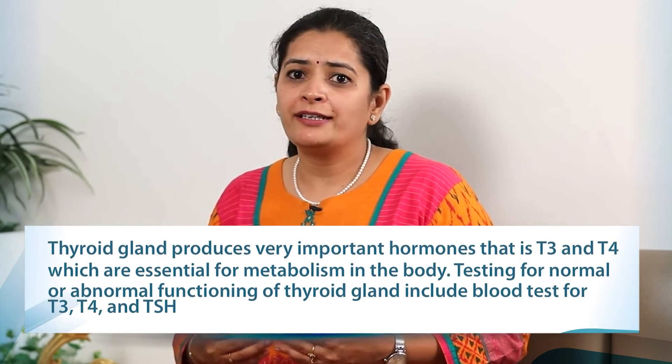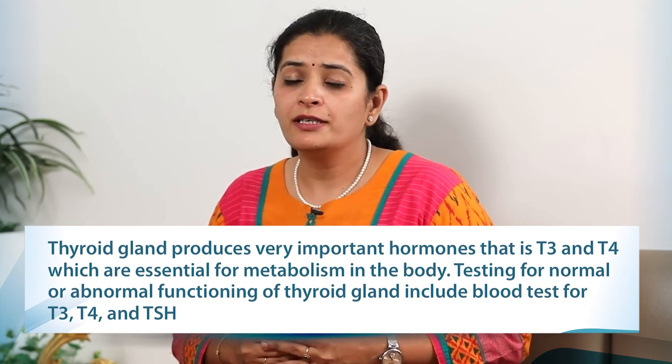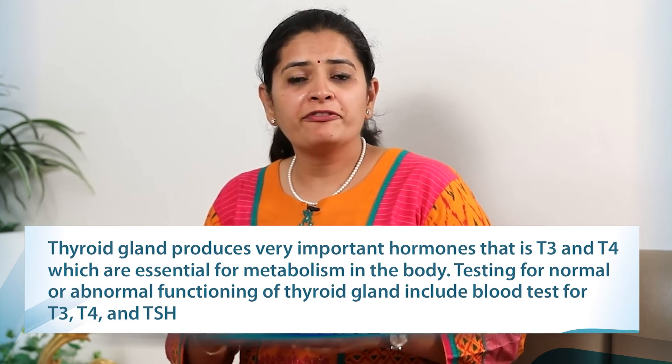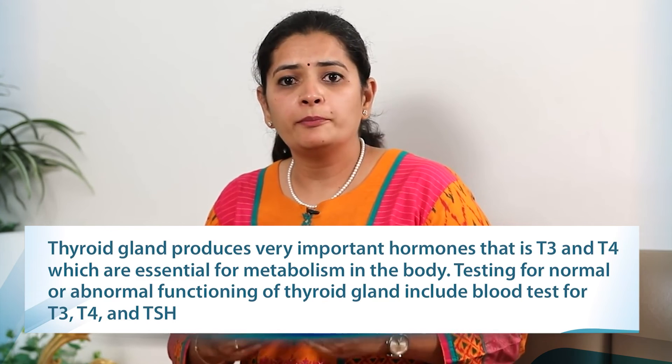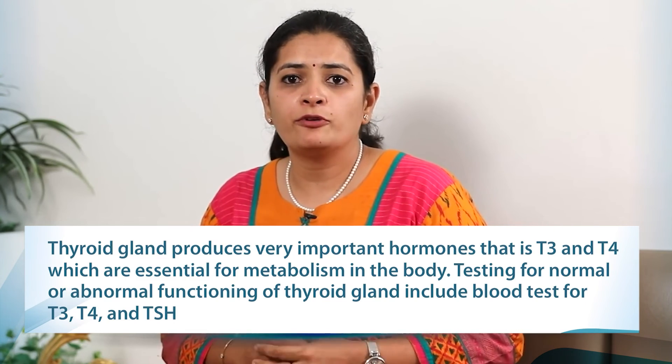In summary, the thyroid gland is a small gland in front of your neck which produces very important thyroid hormones essential for our metabolism. To test for normal or abnormal functioning, we test TSH, T3 and T4 in the blood. For the structure of the thyroid gland, we do an ultrasonography, and in some rare cases a doctor might ask for specialized tests like antibodies or nuclear scans. I'll be happy to take any queries. With that, we will stop today. Namaste.